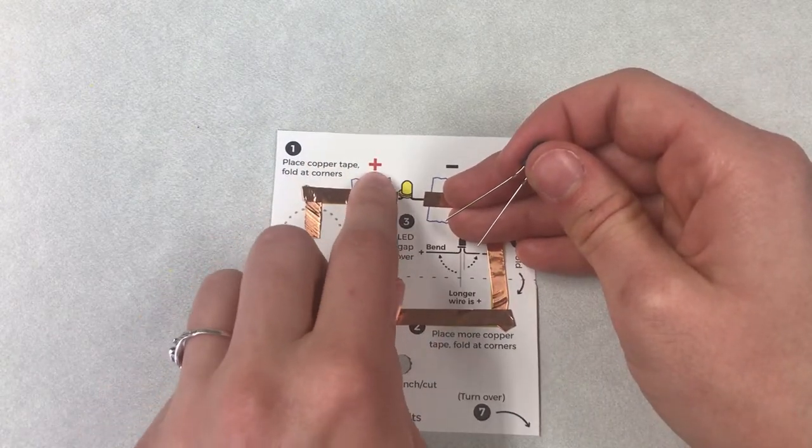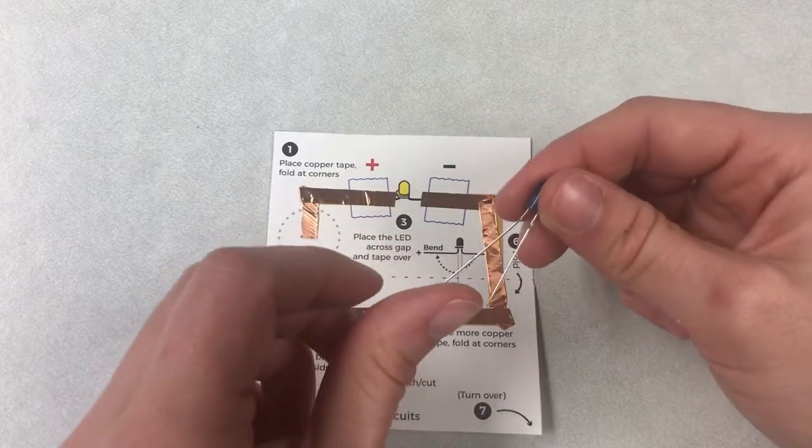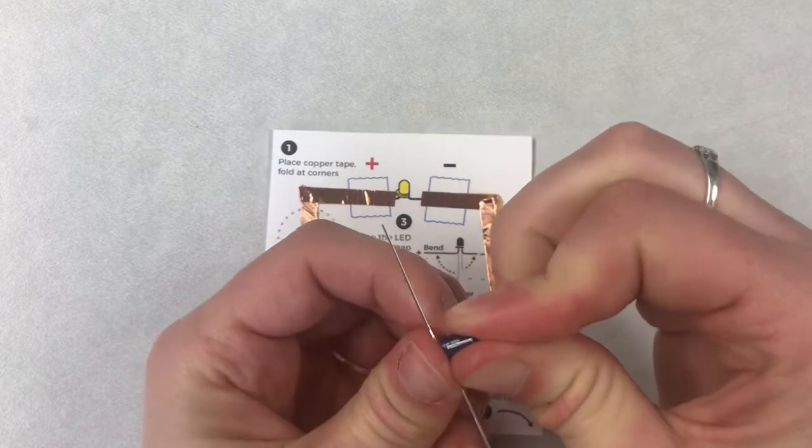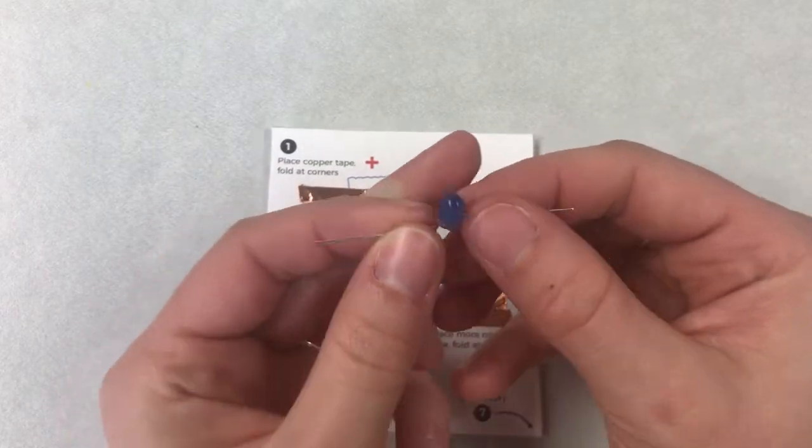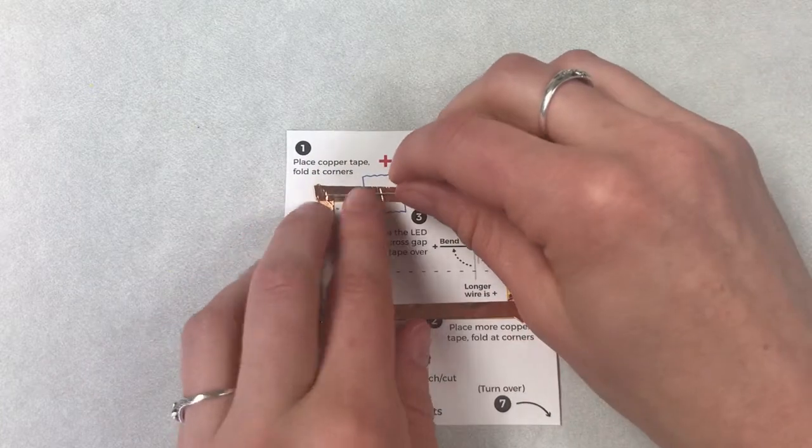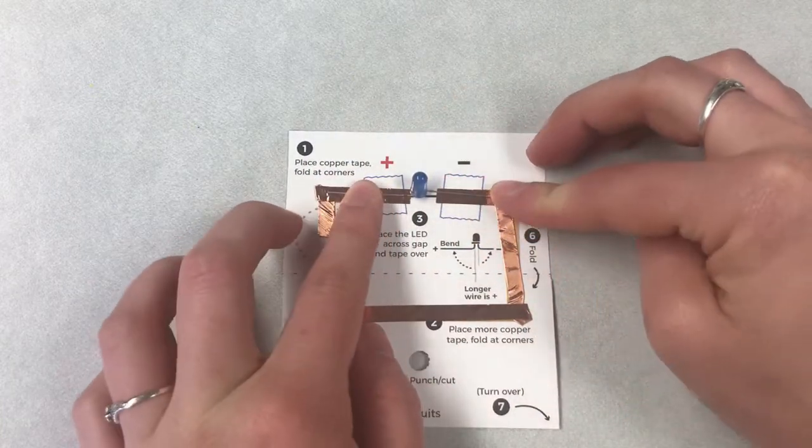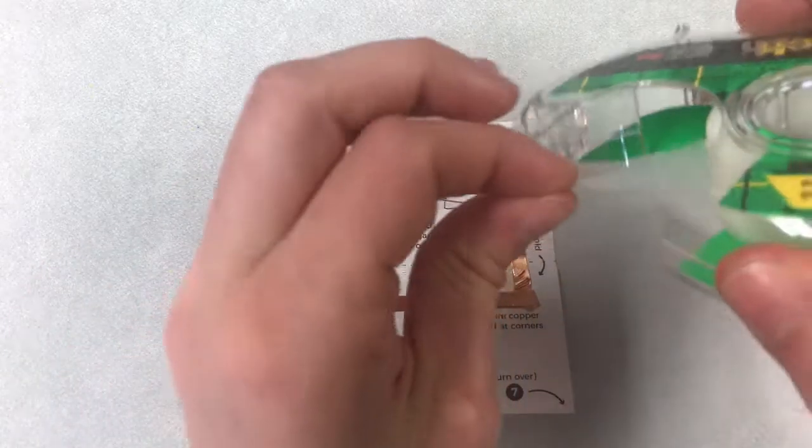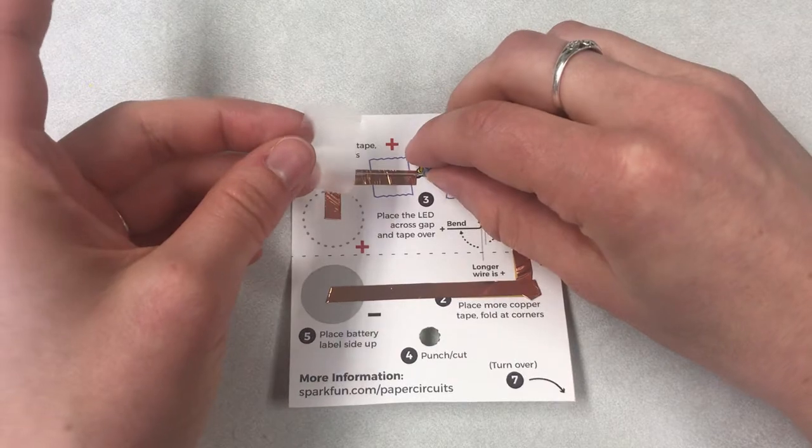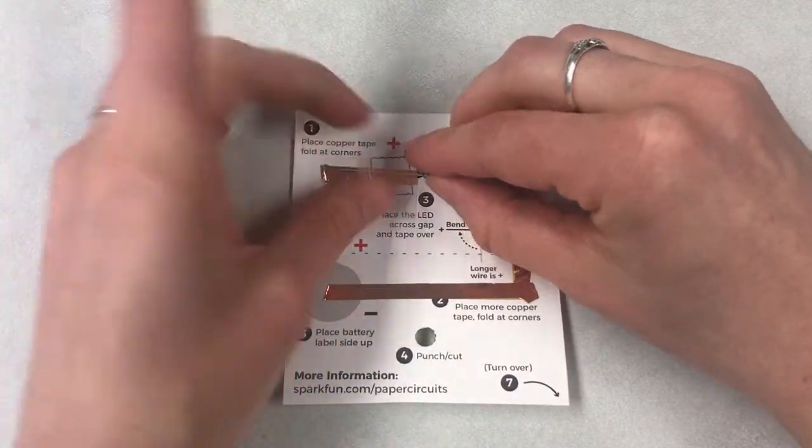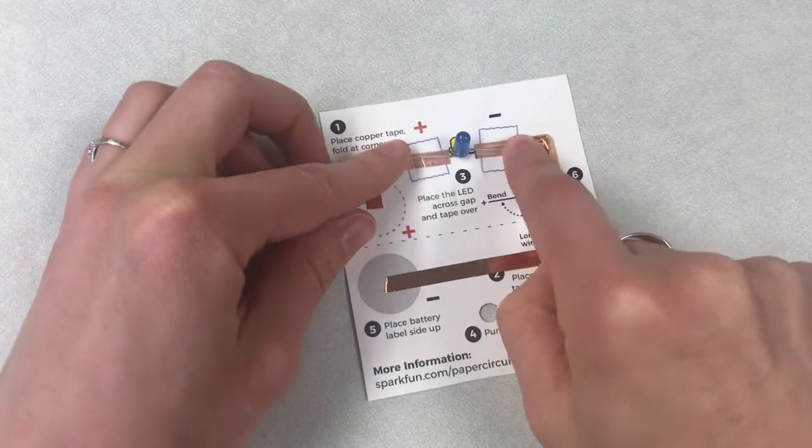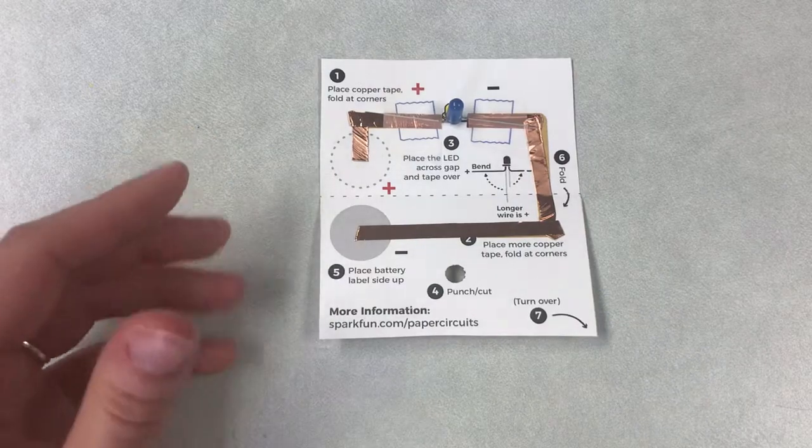The longer wire is the positive side. So we want to put the longer wire next to this plus sign and the shorter wire next to this negative sign, the minus sign. We can separate these pieces, just bend them out like that. And we are going to position it here right over the picture of the light that's on our card. Now we need some tape. I'm just going to grab a couple pieces of regular tape and tape that down right where I want it so that it's touching the copper tape on both sides. It needs to be touching so that it can connect.